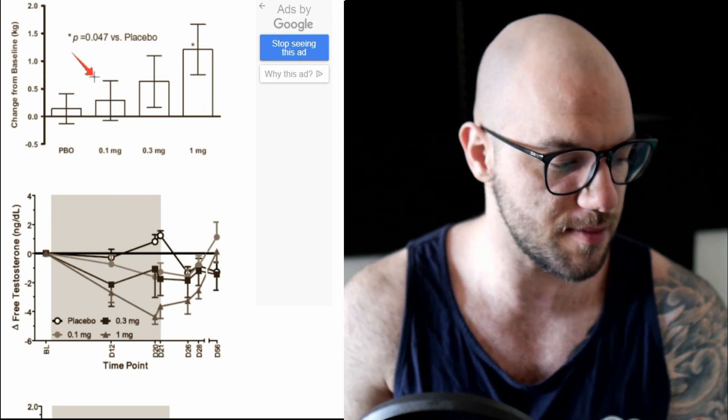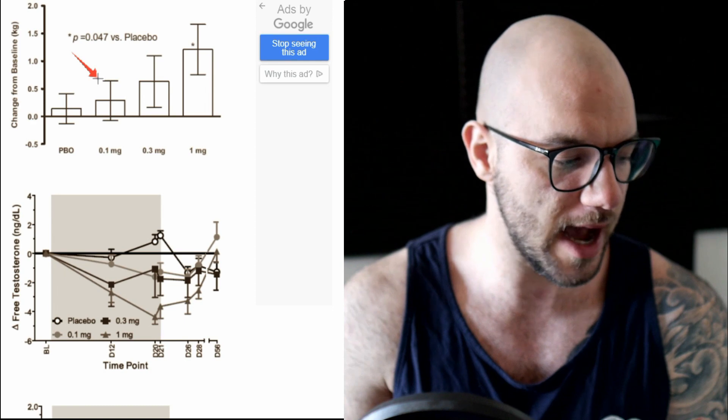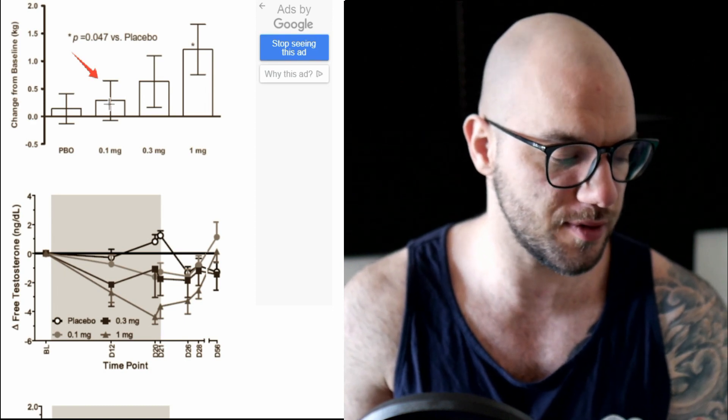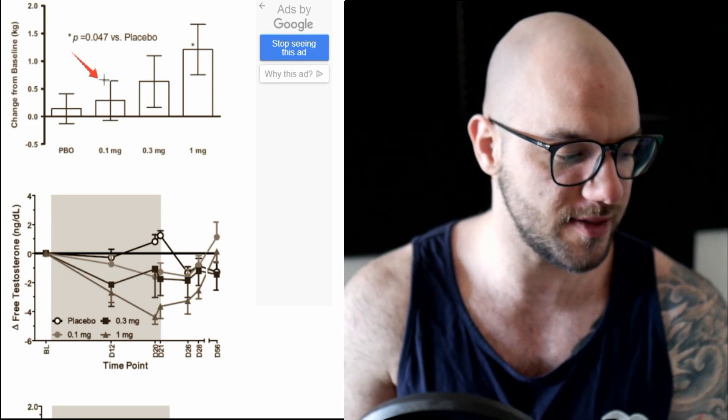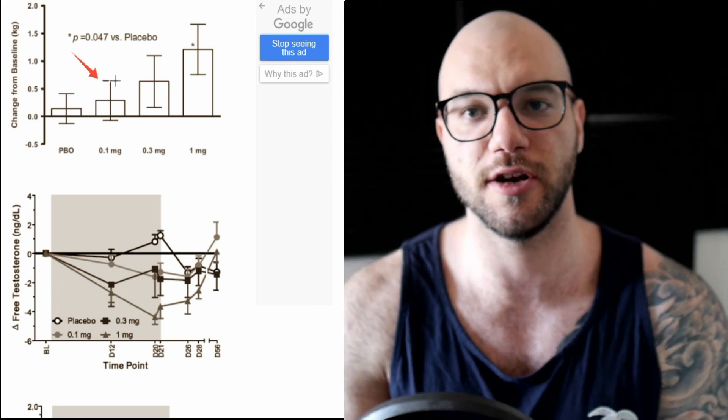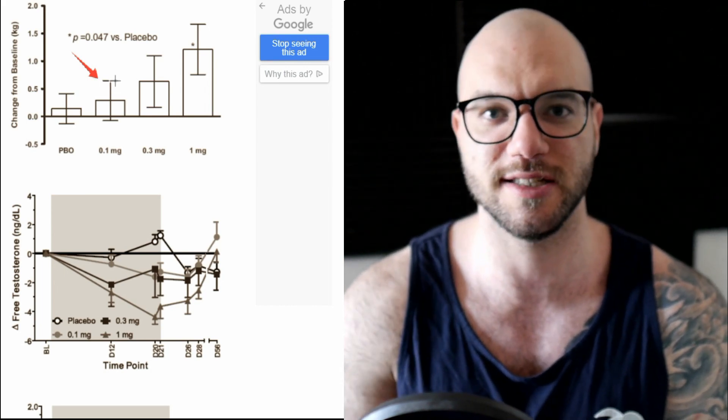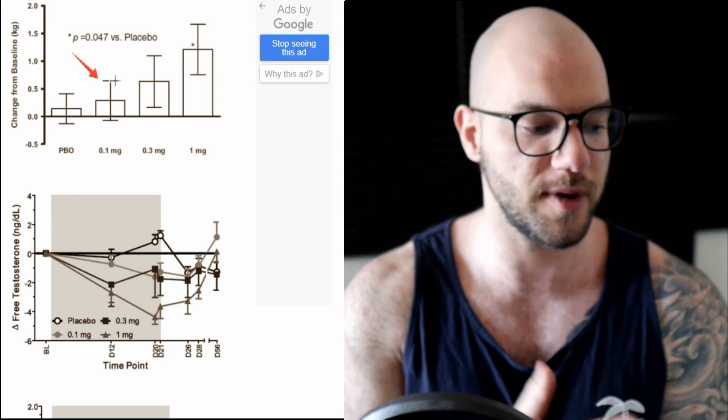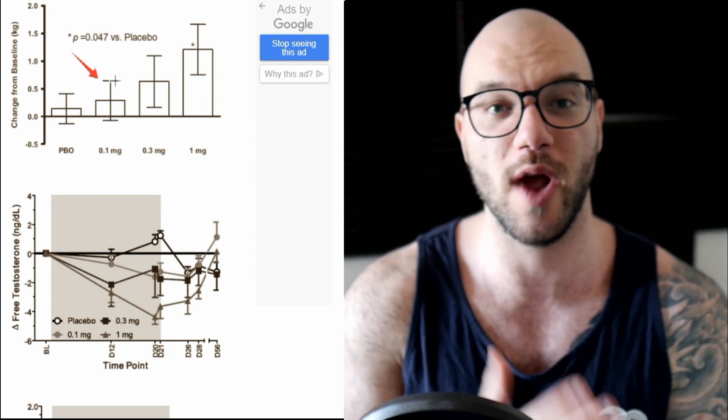So here we can see that the group that took 0.1 milligrams did grow more muscle than placebo, and they put on about 0.2 to 0.3 kilograms on average. And then this bar will be the absolute high end. So here we can see also good genetic variability. Genetics is something that always comes into bodybuilding and here we can clearly see some people put on way more muscle than other people when LGD was introduced.